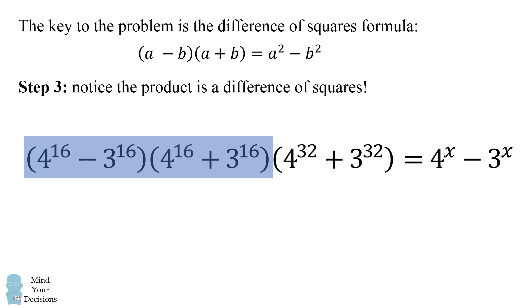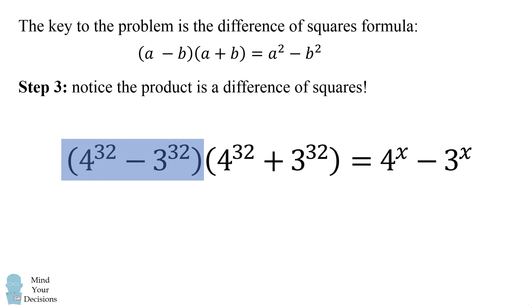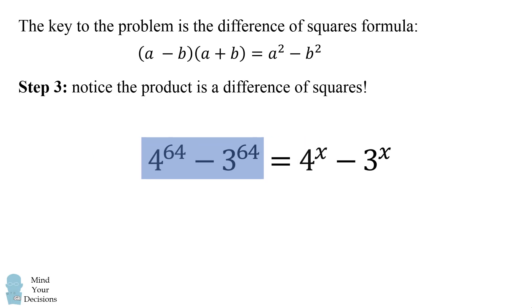So we have 4 to the power of 32 minus 3 to the power of 32 and we're gonna do it one last time. So we end up with 4 to the power of 64 minus 3 to the power of 64. And we're done.